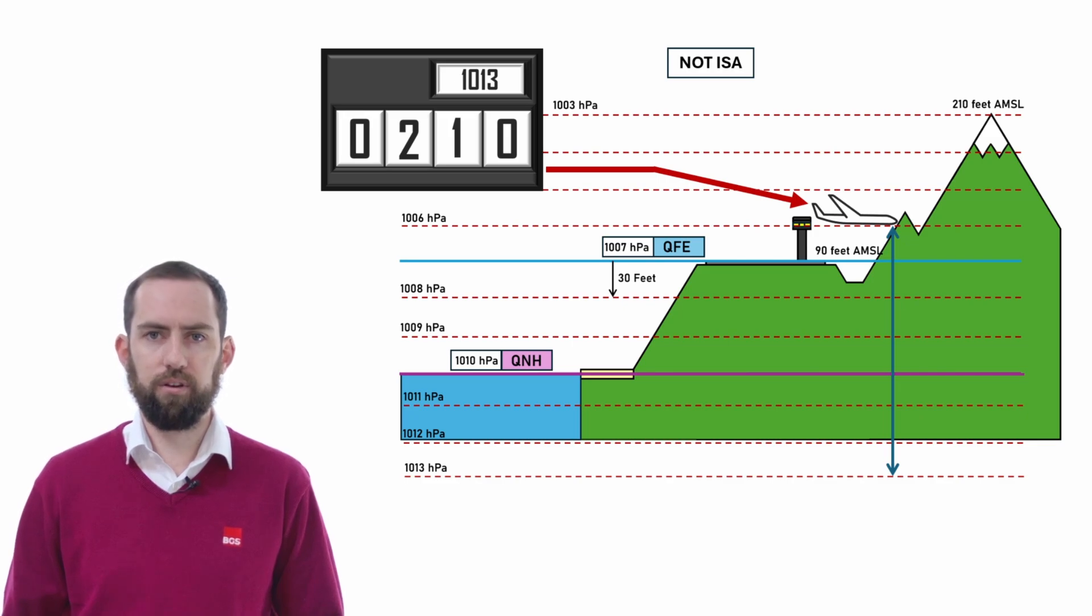Going back to the original scenario, imagine if the pilot forgets to adjust the altimeter setting, and the aircraft takes off and tries to fly over the mountain with the subscale still set to 1013. Your altimeter is reading a difference between 1013 and 1006, a difference of 7 hectopascals, which means your altimeter is reading 210 feet. It should only be reading 120 feet at this point. You can see why this would be dangerous. The pilot is being given a false confidence. They think they should be reaching the height of the peak, but in terms of their true altitude, they still have a lot of mountain to clear.